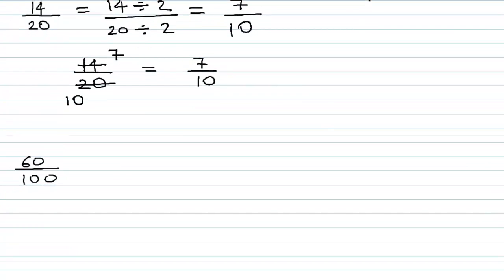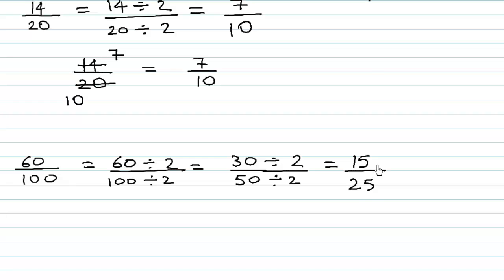Let's take another example: 60 over 100. We can divide 60 by 2 and 100 by 2, getting 30 over 50. Then we can further divide 30 and 50 by 2 because both go in the table of 2. 30 divided by 2 is 15, and 50 divided by 2 is 25.